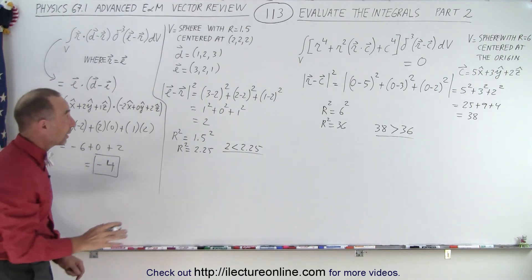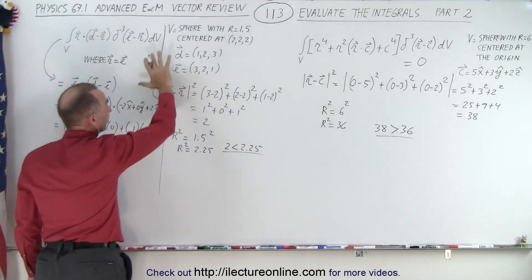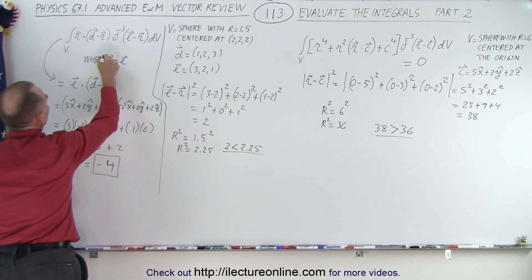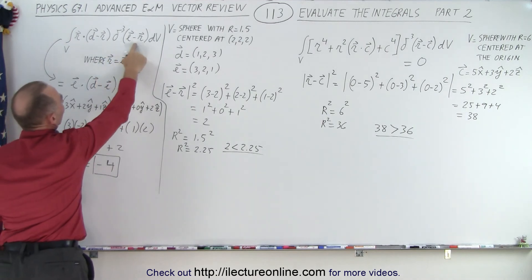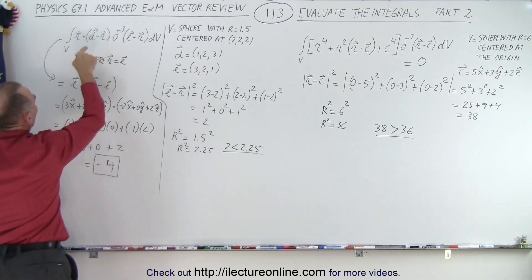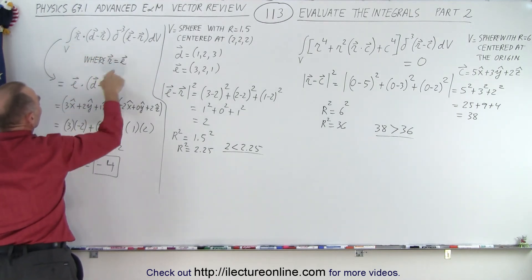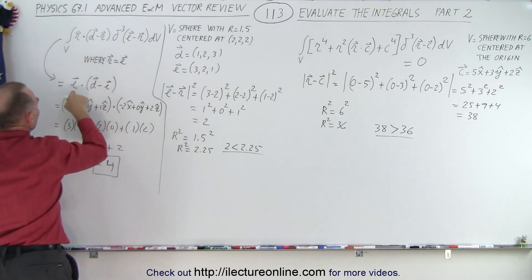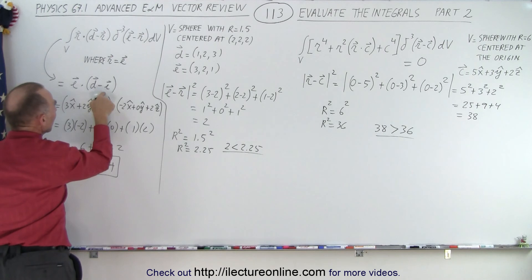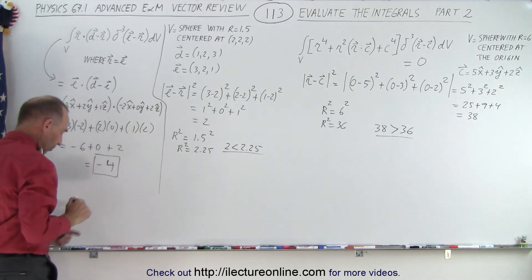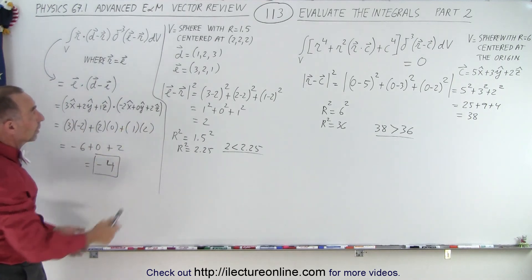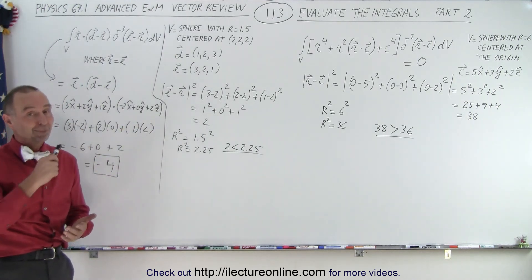So we end up with that integral being equal to minus 4. How did we do that? First, we made sure that the delta function was inside the volume of integration, which it was. Secondly, we set the r vector equal to the e vector so that the argument becomes 0, then we take the function and replace every r with the e vector. So r becomes the e vector, giving a dot product of e dotted with d minus e, which equals minus 4. That's how we apply the delta function.